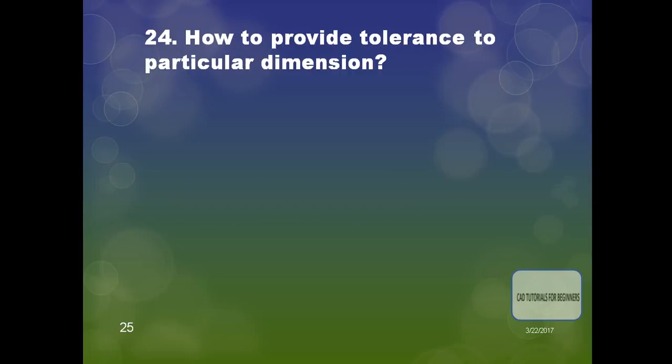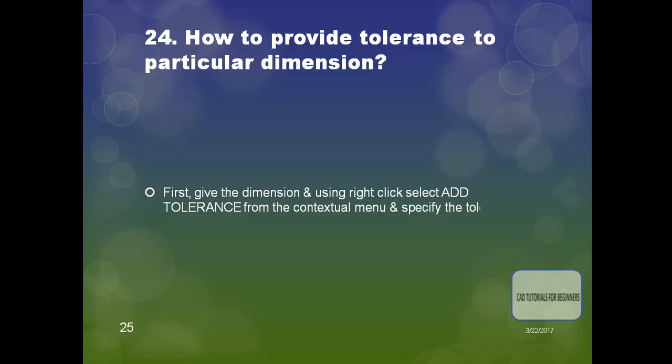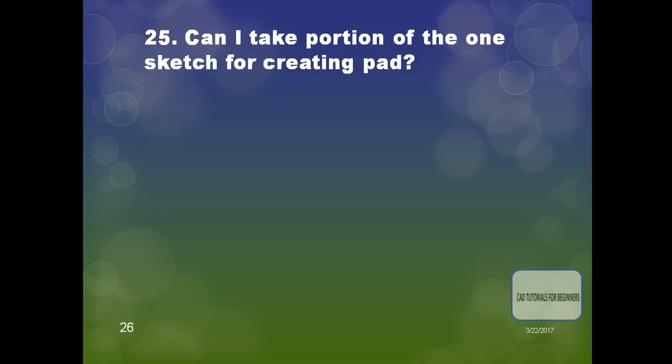The next question is: how do you provide a tolerance to a particular dimension? First, give the dimension, then right-click and select 'Add Tolerance' from the contextual menu, and specify the tolerance values.